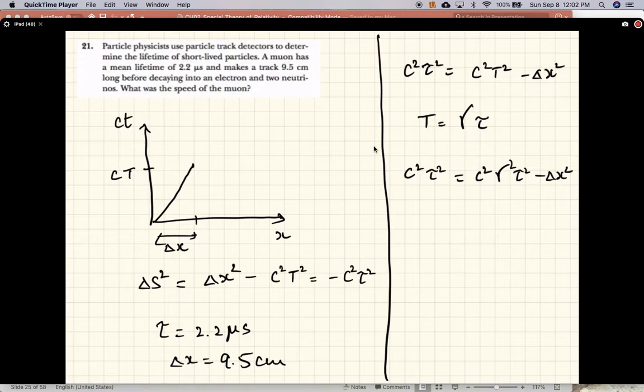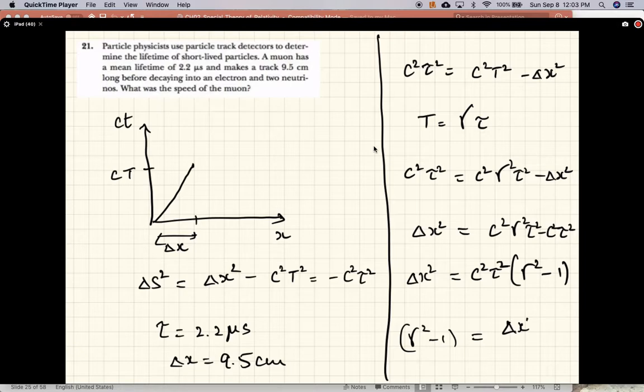Delta x squared equals c squared gamma squared tau squared minus c squared tau squared. So gamma squared minus 1 equals delta x squared over c squared tau squared. And this contains the speed of the muon.